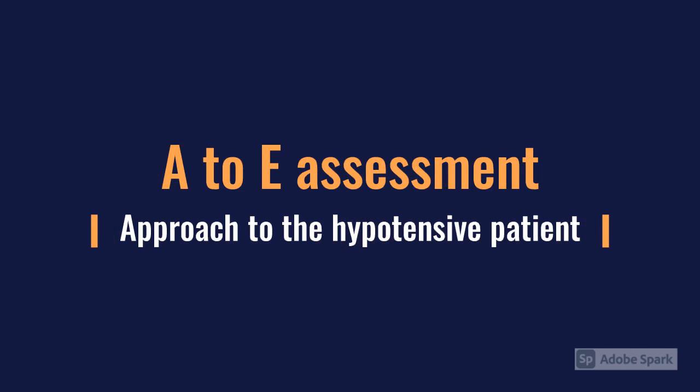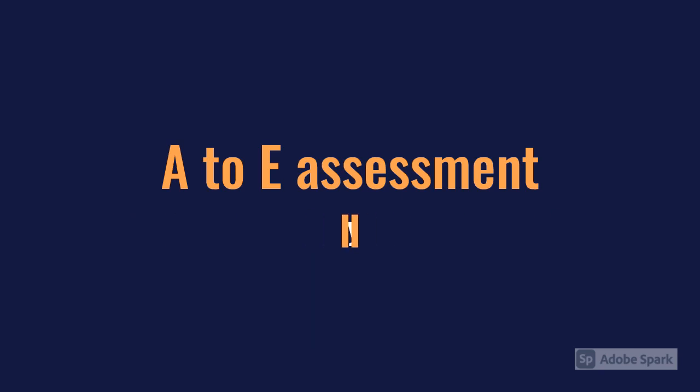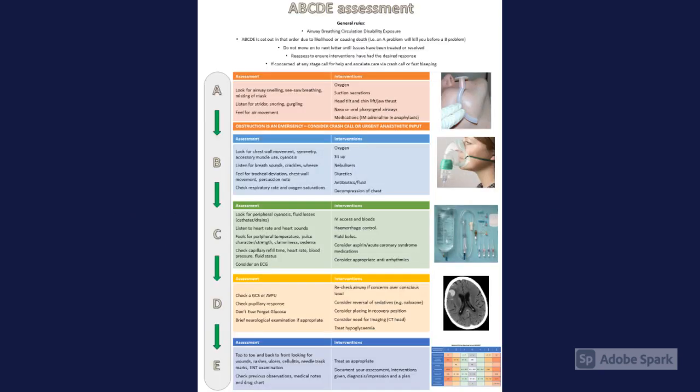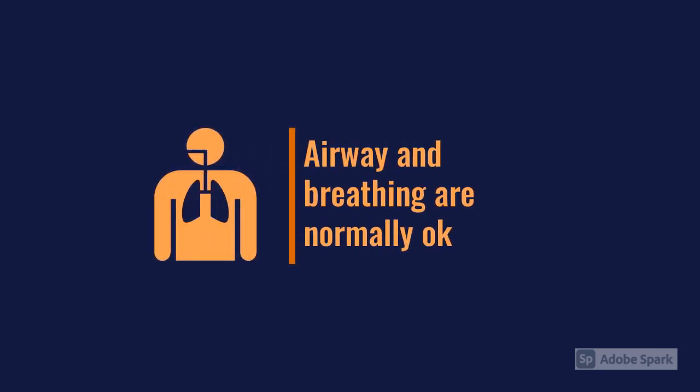Talking about hypotension, your approach starts with a primary survey — as ever, it's the A to E. So although blood pressure is often highlighted as the issue — from a triage nurse, paramedic, or whoever has told you the patient is hypotensive — you still need to start at the top. From an airway perspective, they're normally okay outside of the peri-arrest patient.